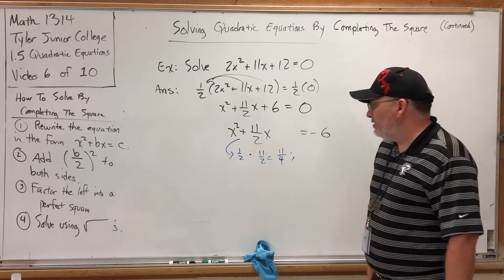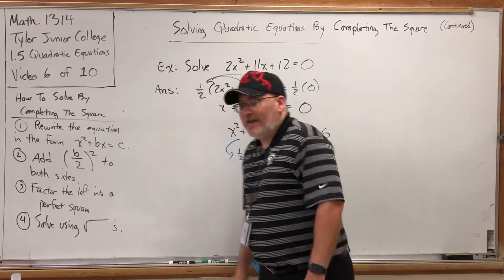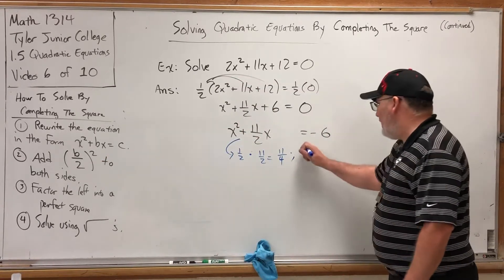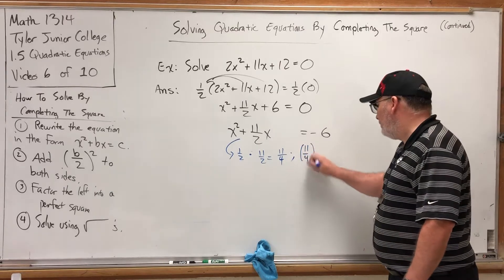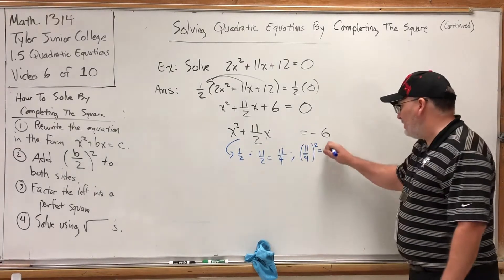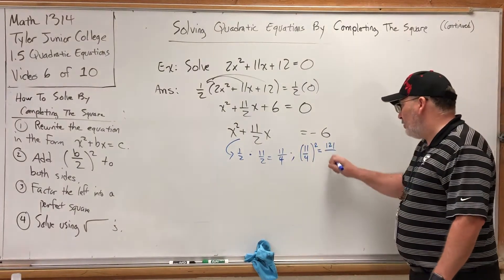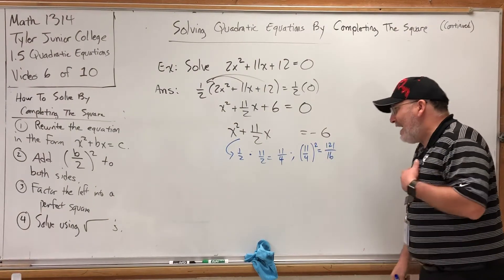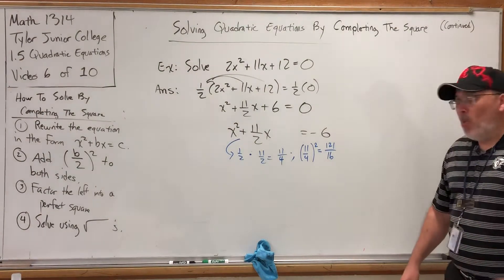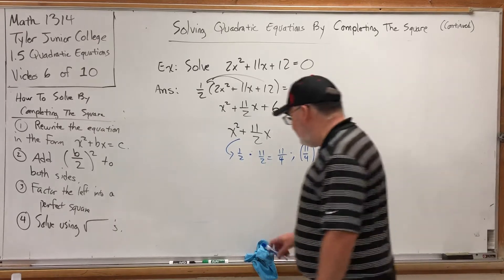But we're not out of the woods yet because we have to add the square of that to both sides. So I have to square 11 fourths. That's easy. You just square the top to get 121. Square the bottom to get 16. I have to add, yes, 121 sixteenths to both sides.